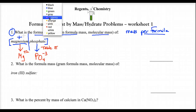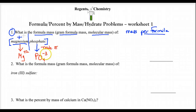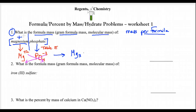We crisscross and use the lowest ratio of these ions — we need a 3 from the phosphate charge and a 2 from the magnesium charge. That gives us Mg3(PO4)2. We need parentheses because there are two phosphate groups. Now that we have the formula, we can find the mass per formula.